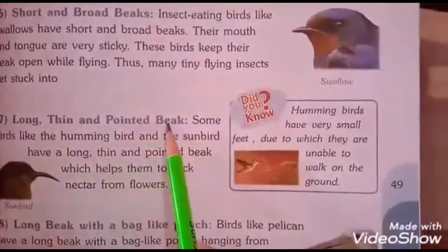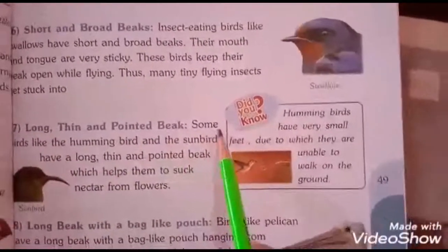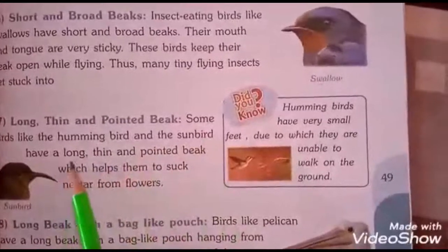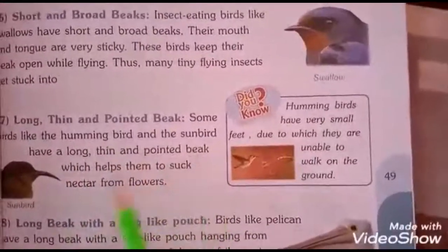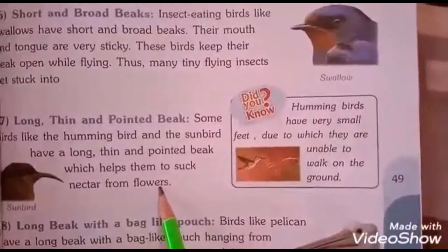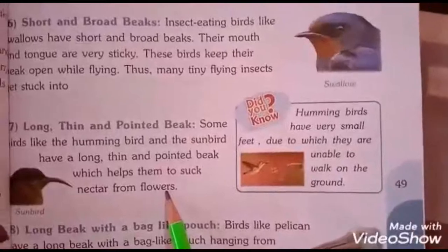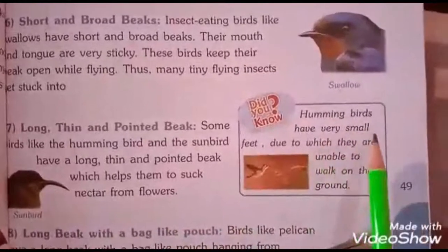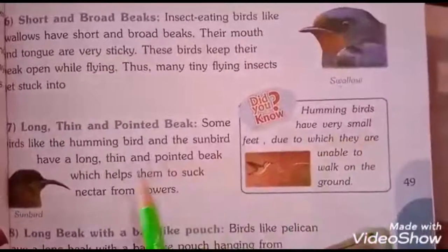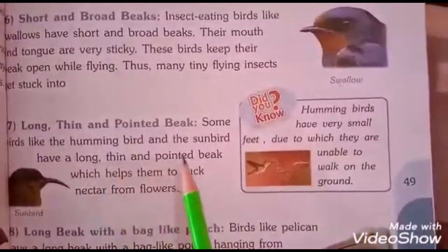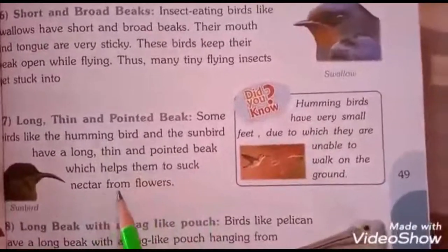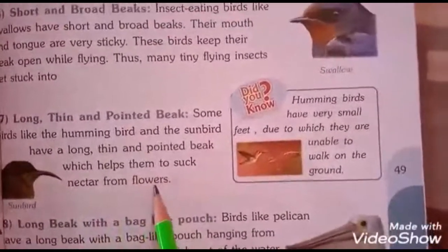The seventh type is the long, thin, and pointed beak. The hummingbird is one of the smallest birds among all birds, and it has a very long, thin, and pointed beak which helps it to suck nectar from flowers.